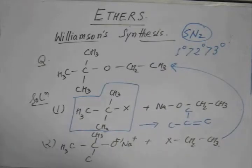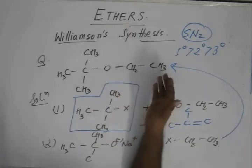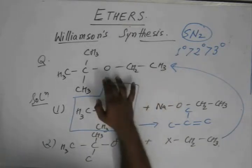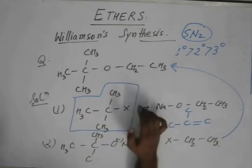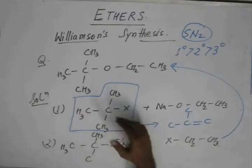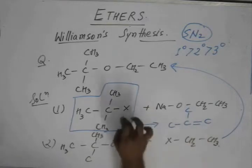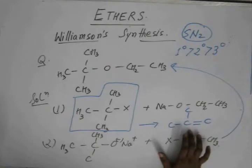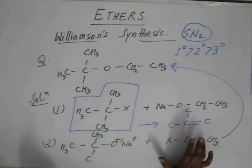Please keep in mind that whenever you need to generate or produce an ether like this, which involves the discretion between selecting a 3-degree alkyl halide or a 3-degree sodium salt of an alcohol, 3-degree alkyl halide leads to elimination product rather than substitution product, and the product that we get is an alkene rather than ethers.